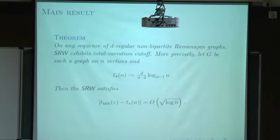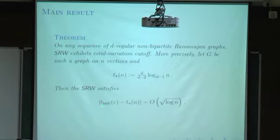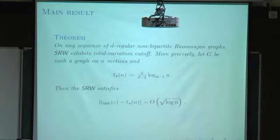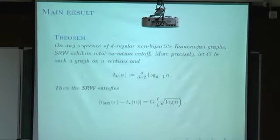Our theorem is that the simple random walk exhibits cutoff. The mixing time T_mix(ε) minus T*(n) — where T*(n) is log n multiplied by D over D minus 2 — is of lower order: it's order root log n. This bound is sharp in the sense that the difference really is of that order.